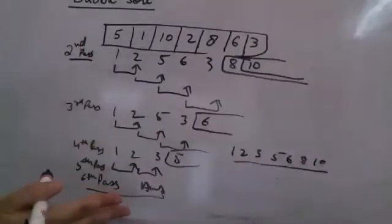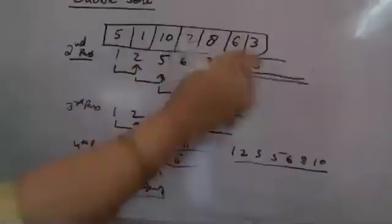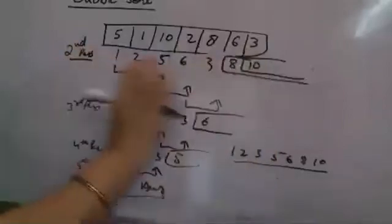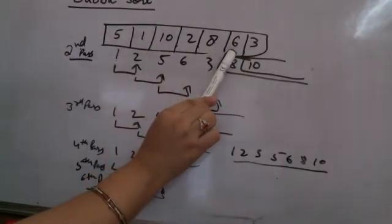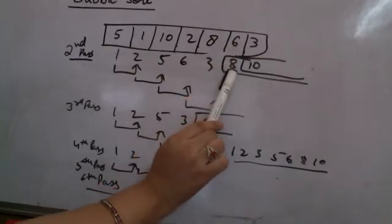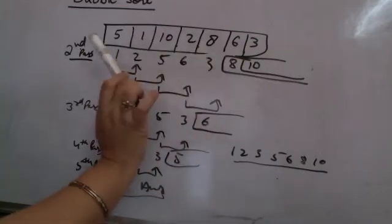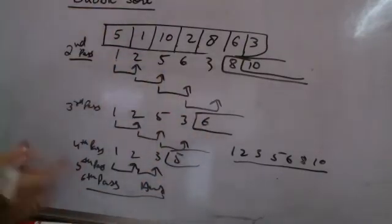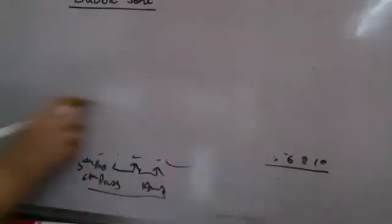In bubble sorting I compare two adjacent elements and keep on comparing so that when comparing n elements I get the largest of all. The next time I compare n minus one elements I get the second largest, then n minus two, n minus three, and so on down to the first element.